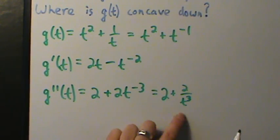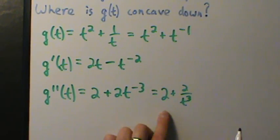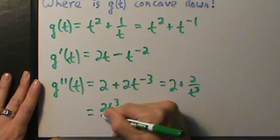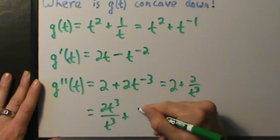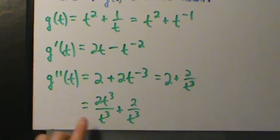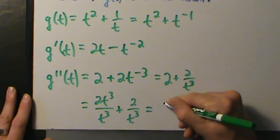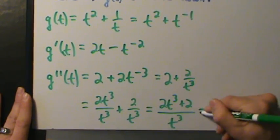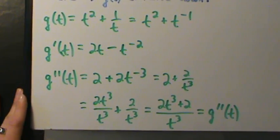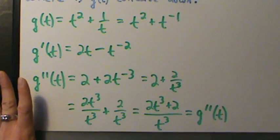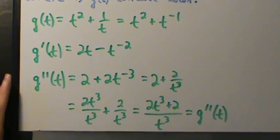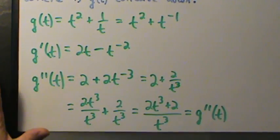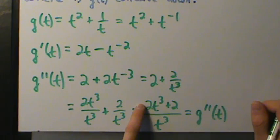Now let's get a common denominator — we don't have to, but it'll make things easier. Multiply the 2 by t cubed over t cubed to get 2t cubed over t cubed, plus 2 over t cubed. Combining into one fraction gives us 2t cubed plus 2, all over t cubed. This is our second derivative g double prime of t.